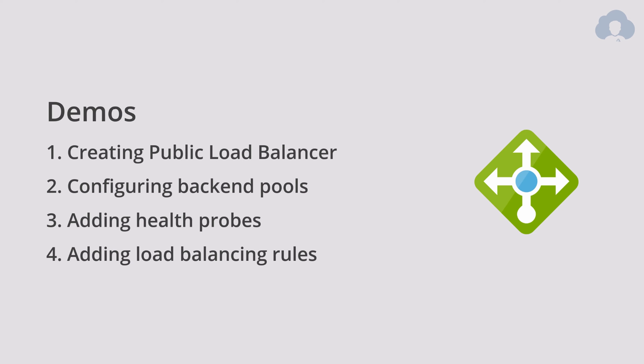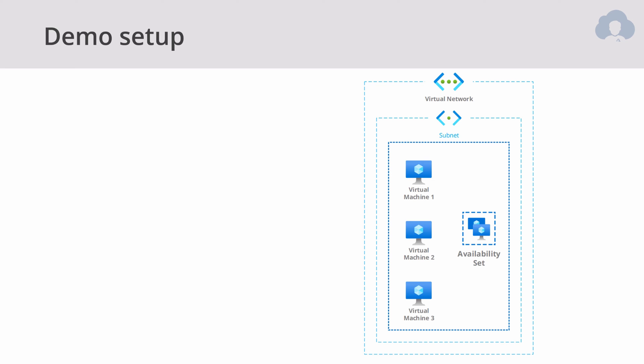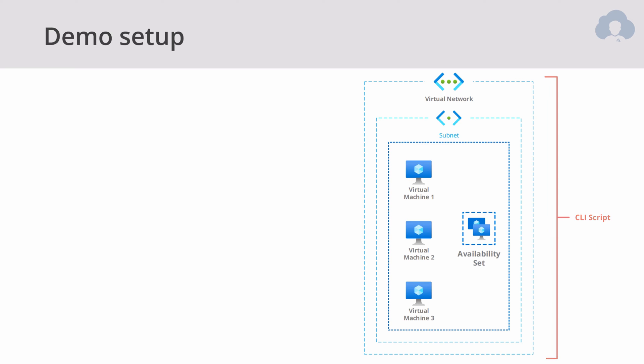The demos for today include creating a public load balancer in the Azure portal, then running a script to create infrastructure, creating a backend pool, adding a health probe to ensure the backend is up and running before redirecting traffic, and finally creating a load balancing rule and testing everything in the browser. For this demo, we'll use an availability set with three virtual machines. I created a simple CLI script you'll run in Cloud Shell to provision the infrastructure.